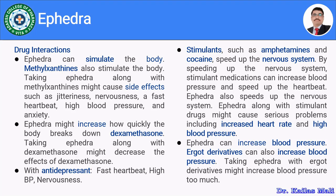The second drug interaction is between ephedra and dexamethasone. Ephedra may increase how quickly the body breaks down dexamethasone, acting as an enzyme inducer. This promotes enzymes responsible for dexamethasone metabolism, thereby reducing its plasma concentration and effects.